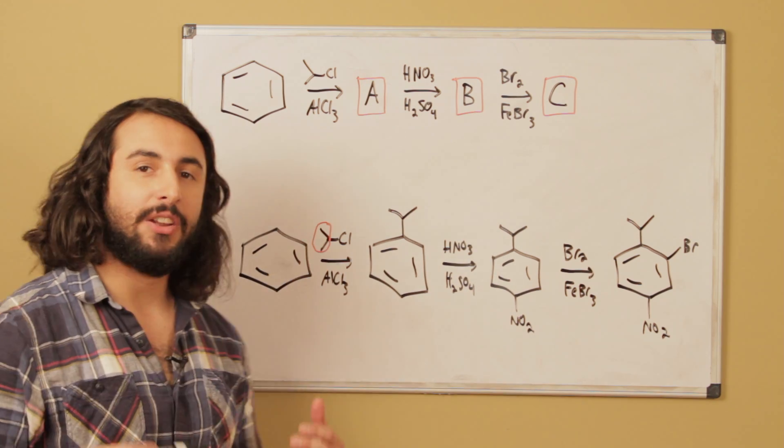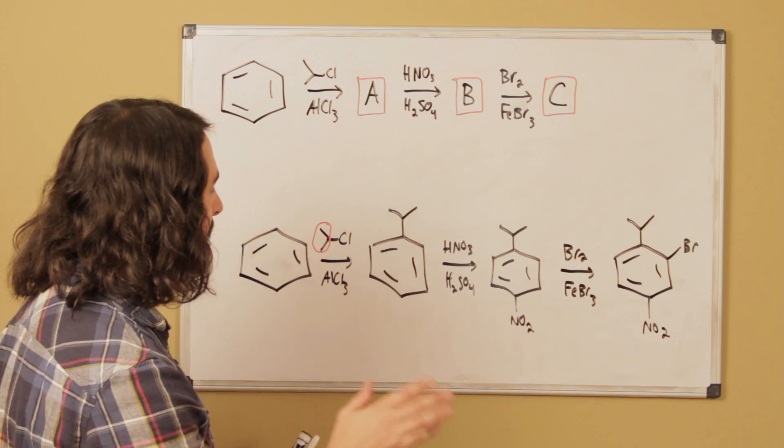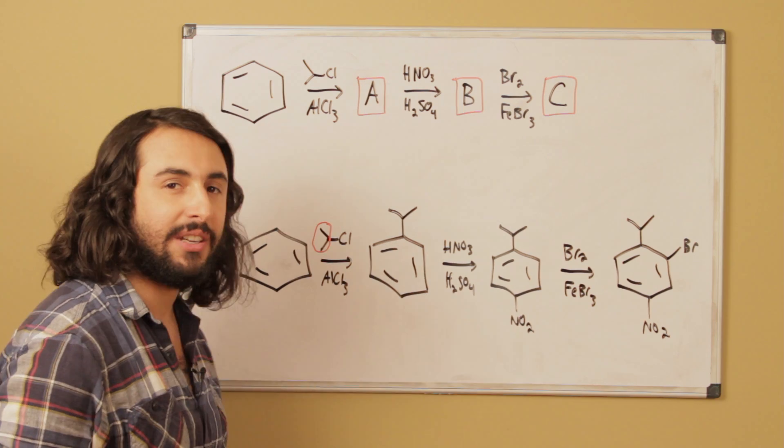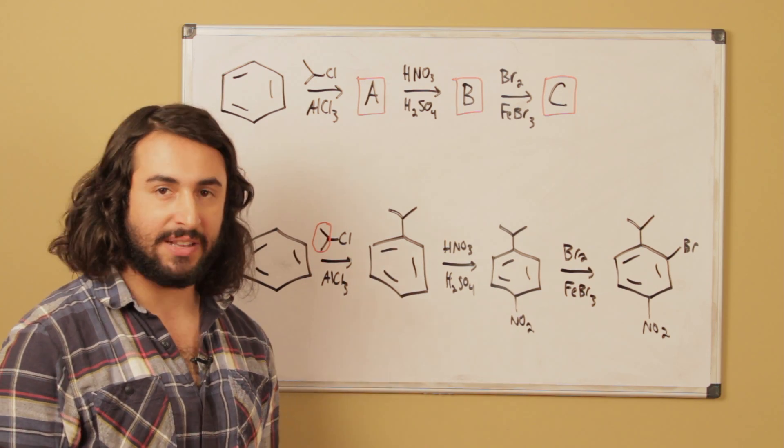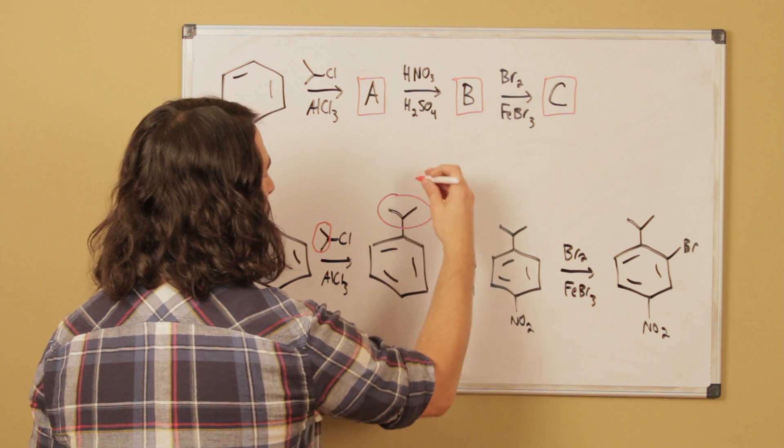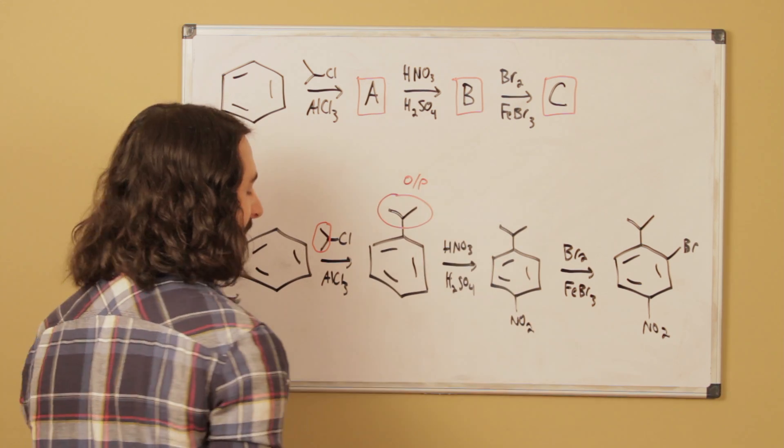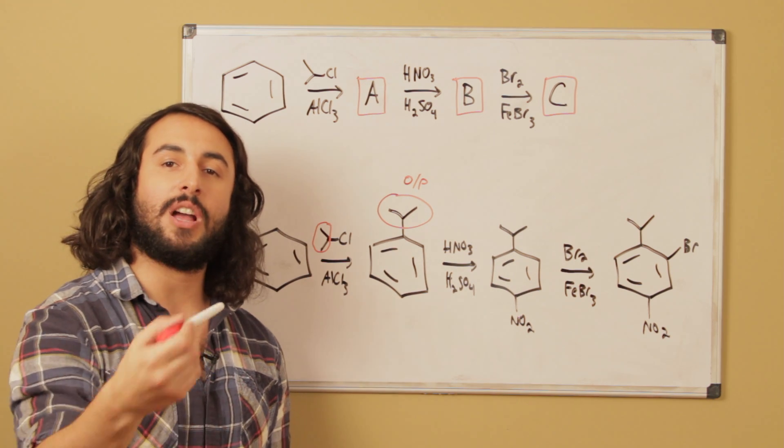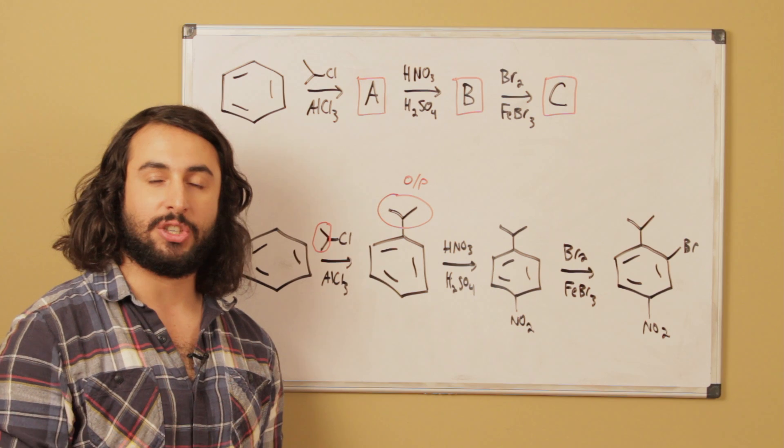But after that there begins to become a discrepancy in the legitimacy of it, because here this is going to be a nitration—these are the conditions for nitration of a benzene ring. But this group right here, alkyl groups, are ortho-para directors. So that means that this isopropyl group must direct the incoming nitro group to the ortho or para position.